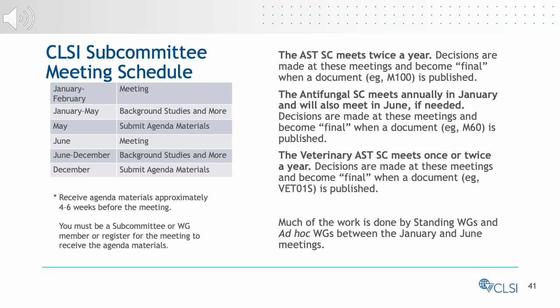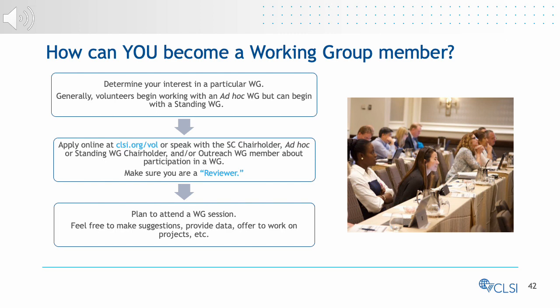The CLSI subcommittees meet once or twice per year, typically in January and June, in various locations in the United States. Here you will find a brief schedule of when agenda materials are due in advance of the meeting. To get involved, first figure out which working group you'd like to join. Typically, AST volunteers start with an ad hoc working group, but you could also begin with a standing working group. You can apply online to a working group at clsi.org/vol. However, the easiest and quickest way is to speak with the chairholder about participation. Make sure you are a reviewer, meaning that you've submitted your CV and disclosure of interests to CLSI and qualify as a member or have paid the administrative fee. Finally, plan to attend a working group session and join in.